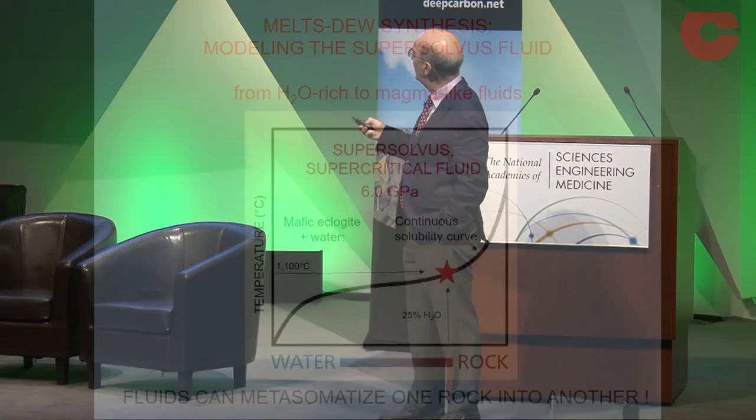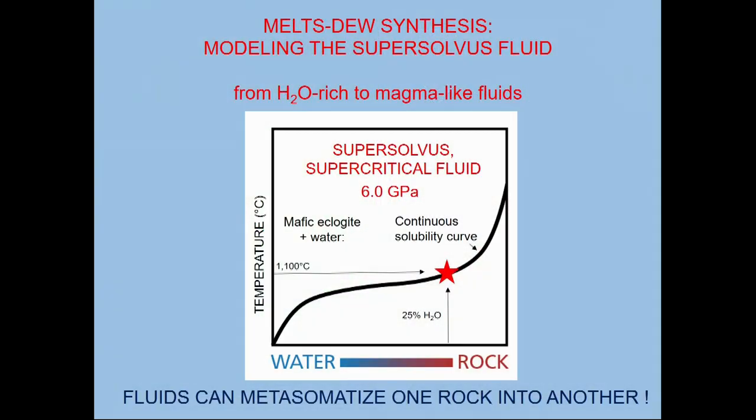This is a continuous solubility curve as a function of temperature, that fluids like this can now be modeled from a purely aqueous standpoint, going from here all the way up through to here. And this is really rather a melt-like situation, but it is a truly supercritical fluid. Fluids like this are very powerful. They can absolutely overwhelm one rock and turn it into another rock. And that's because of the incredible amount of salt, of solute, that's dissolved in these fluids.